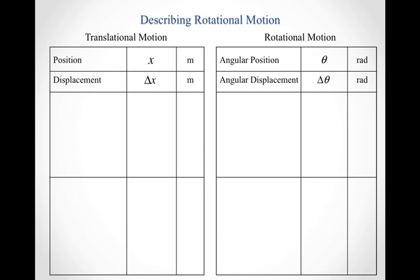It's particularly useful in terms of translational motion to talk about the displacement — it moved from some initial position to some final position. We can similarly talk about angular displacement, which is basically what angle did your object rotate through. In the same sense that both position and displacement for translational motion have units of meters, both of these for rotational motion have units of radians.